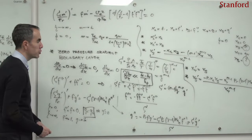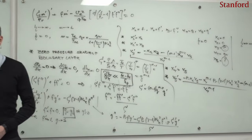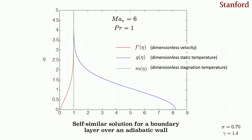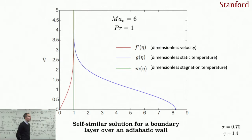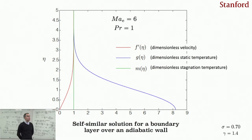Integrating this problem numerically yields results shown on screen. The first figure shows the self-similar variable eta on the vertical axis, with dimensionless velocity F', dimensionless static temperature G, and dimensionless stagnation temperature M on the horizontal axis. This integration is done for an adiabatic wall, Prandtl number of unity, and edge Mach number of 6.